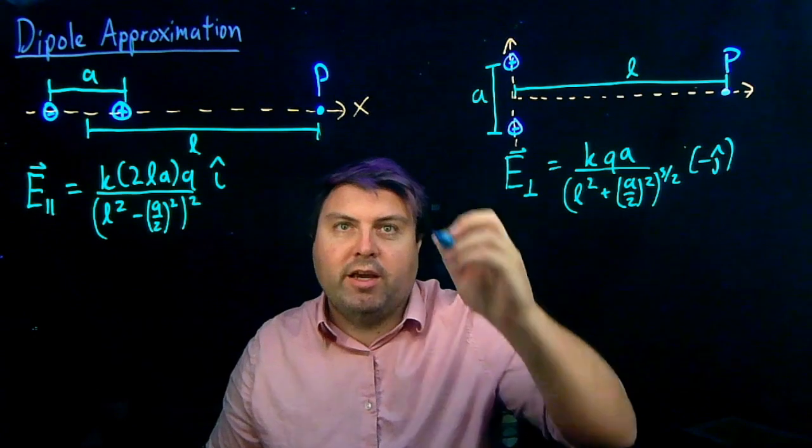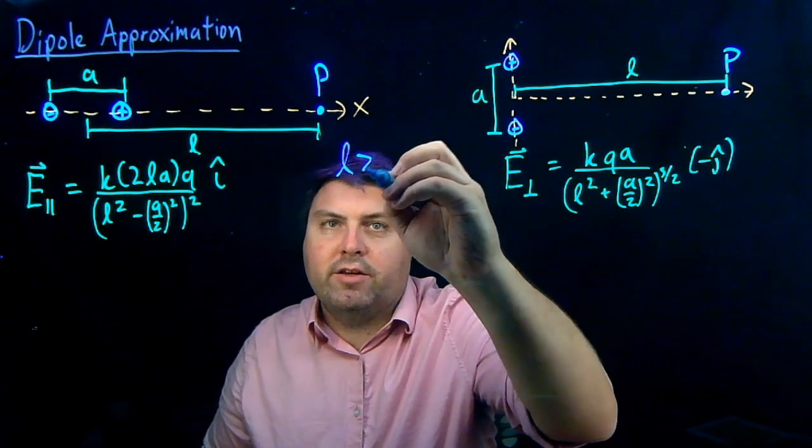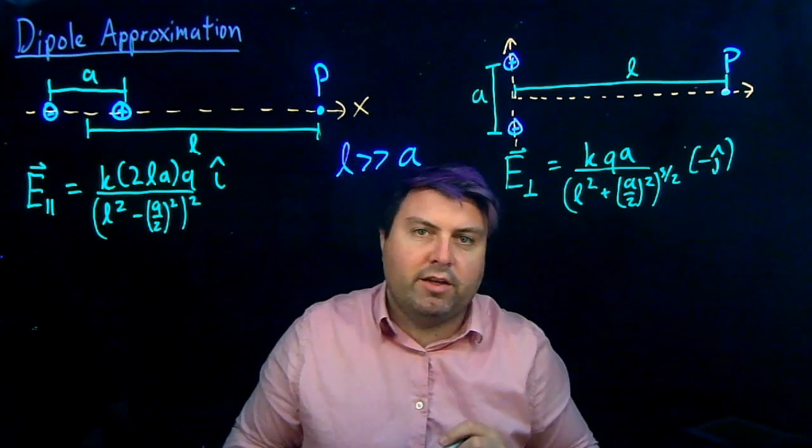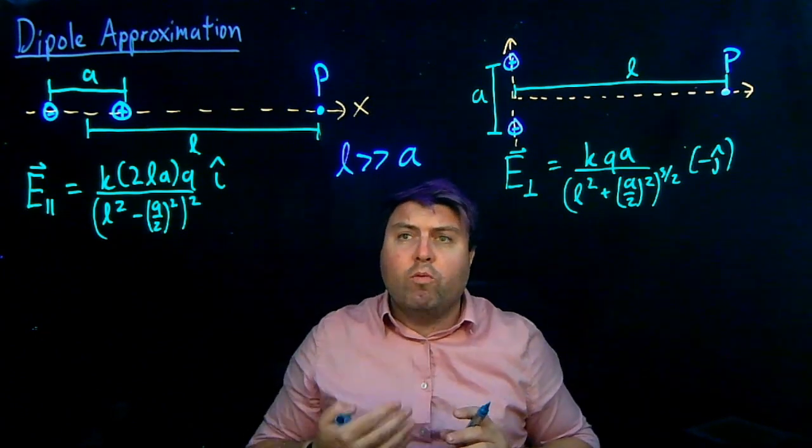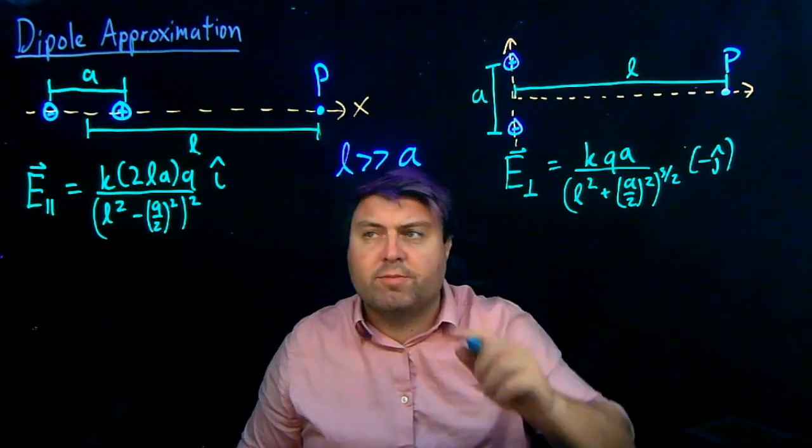So, we're going to make a dipole approximation that L is much, much larger than A. So, what does this mean if we have L is much, much larger than A?